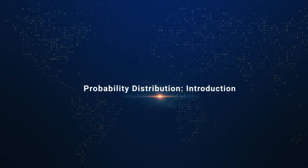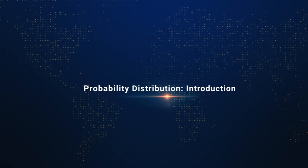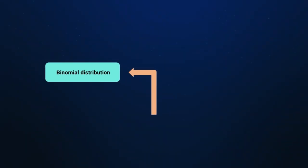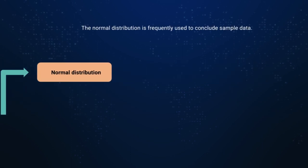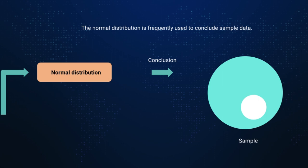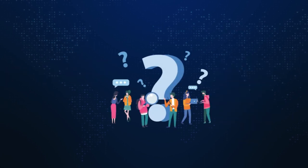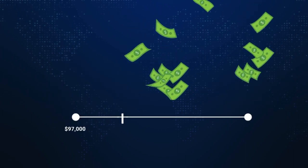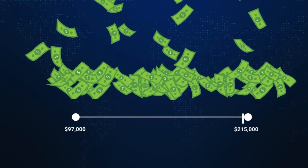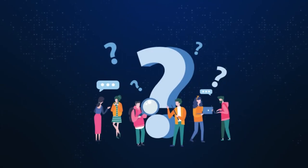In this lesson, we will discuss probability distributions and different types of probability distributions, namely binomial distribution and normal distribution. Probability distributions such as normal distribution are often employed to draw inferences from sample data. For example, how does one make the following inference: what is the probability that a data scientist in the US earns between $97,000 to $115,000? We will try to explore such questions in this lesson.